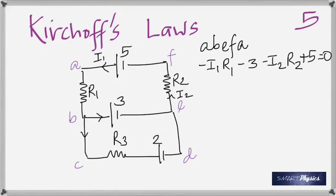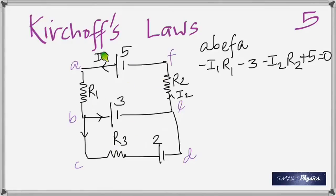A student asks whether I1 and I2 should be the same since it's the same loop. Because the current connects back, the current leaving the battery must return to it, so there was no need to label the return path as I2 — it is still I1. Kirchhoff's laws are easy when understood; the key is knowing which signs are positive or negative.